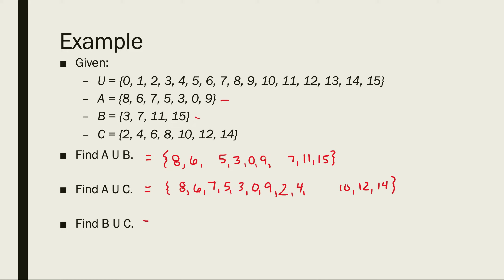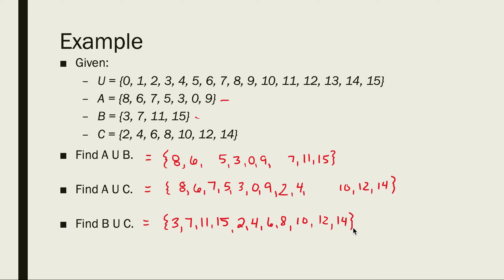Our final union example asks for B union C. I write down B: 3, 7, 11, and 15. Right next to it I write down C: 2, 4, 6, 8, 10, 12, 14. I look for any duplicates, but these two sets do not appear to share any elements, so there are no duplicates to remove. I now have B union C.